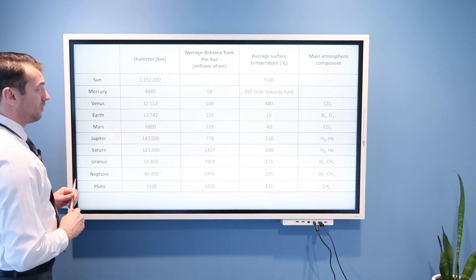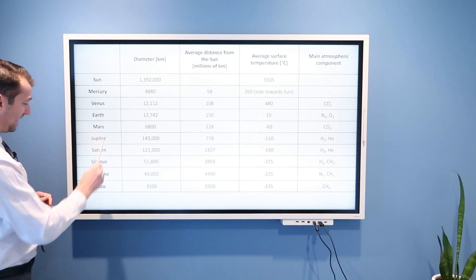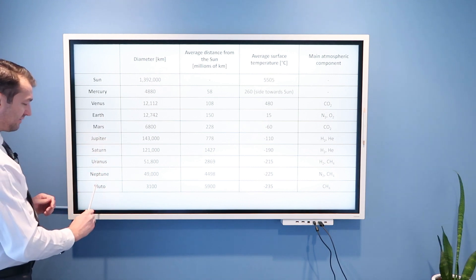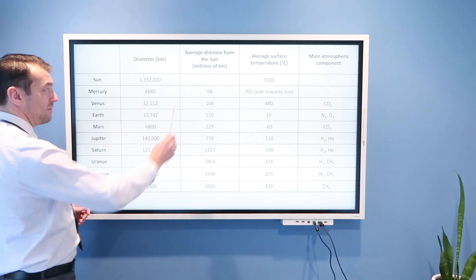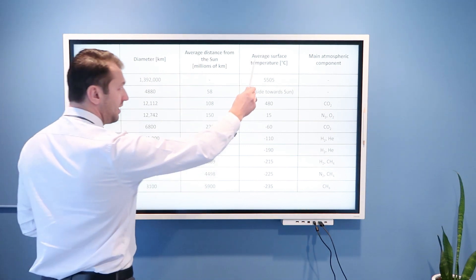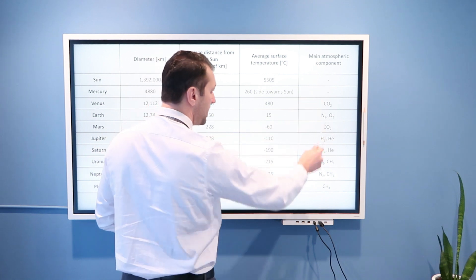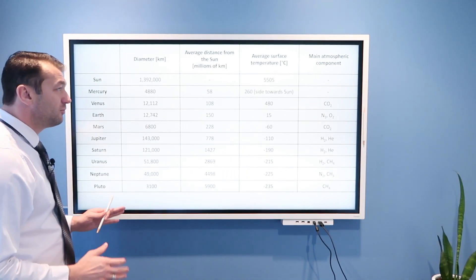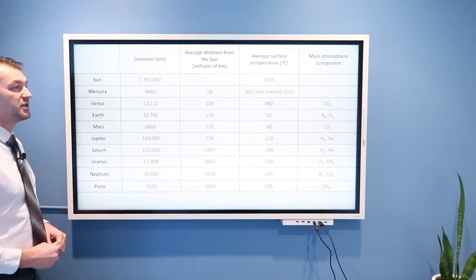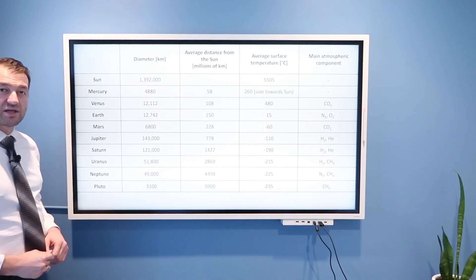Here is a nice overview of Sun, other planets in our solar system, as well as Pluto. Pluto is not a planet, it's a planetoid, but here is their diameter, average distance to the Sun, average surface temperature, and main composition of these atmospheres. I will remove myself so you can take a picture of this and use it in your studies.